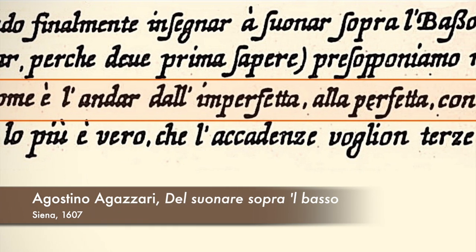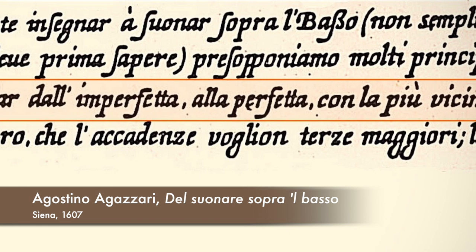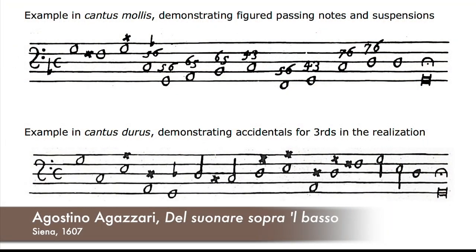Agazzari not only refers to this imperfect-to-perfect rule, but he also shows how it is applied in these two examples. One is in cantus mollus and the other in cantus durus. By showing the most used progressions, his examples reflect pretty much the basic harmonic material of the pre-tonal period. And although it was not his intention to show the application of the rule but how to use figures, the rule is confirmed in almost every progression.